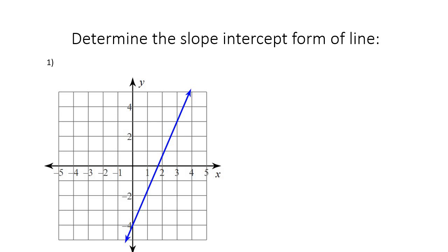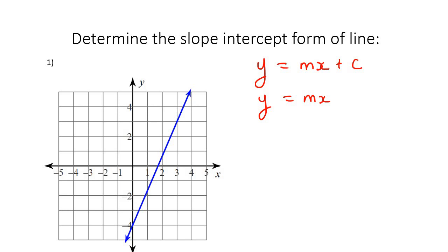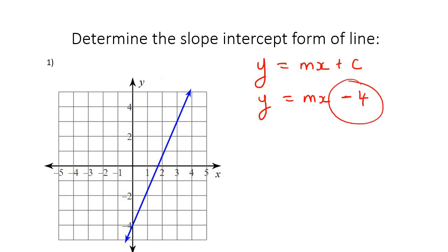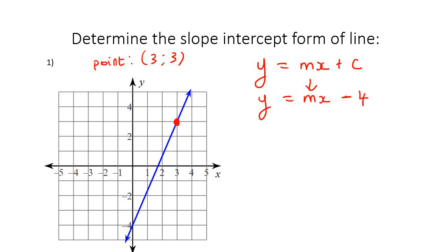Here's our first practice example. We know the equation is y equals mx plus c. We can see that the line is going through minus 4, so that is your y-intercept — go ahead and put minus 4 for c. We don't even have to use the slope formula if we already know c equals minus 4. To find m, just go find any other point on the graph. This point here has coordinates of 3 and 3. You don't have to do it this way, but it's a pretty cool method.